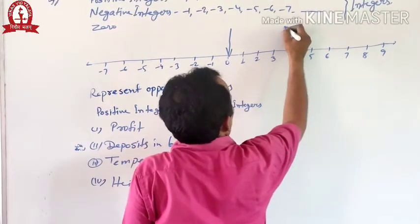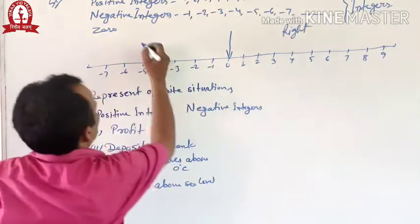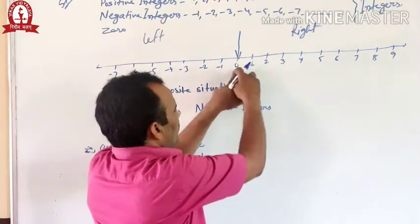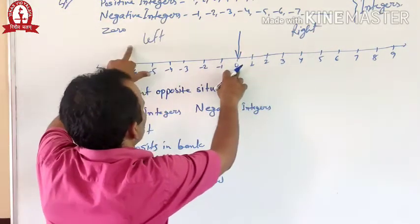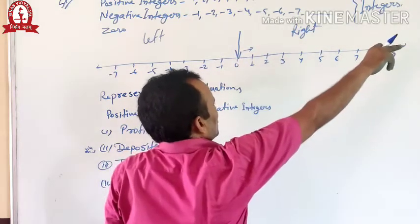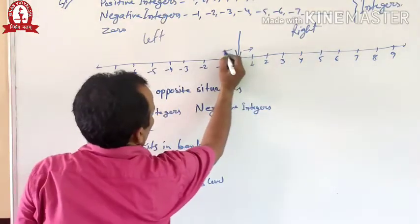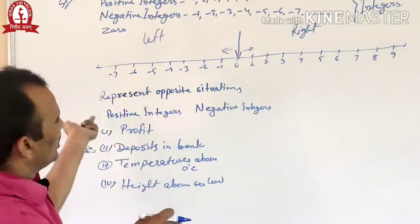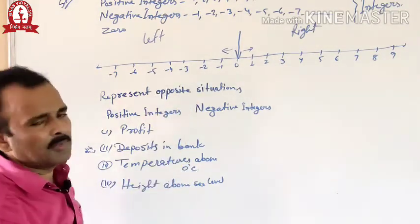This is the right portion of the number line and this is the left portion. The right side is to the right of zero and the left side is to the left of zero. When we go from zero to the right side, the numbers increase. When we go from zero to the left side, the numbers decrease. Every number placed on the left side of another number is lesser than that number.